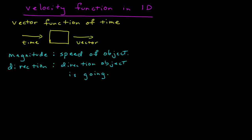In this video, I want to introduce the velocity function in one dimension. The velocity function is also a vector function of time, which means that you input some time into this function and it outputs a vector. The magnitude of this vector tells you the speed of the object, and the direction of this vector tells you the direction the object is going at that instant.